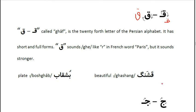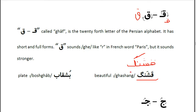Let's take a look at two sample words. The first one starts with Qaf in the beginning, so we use the short form. The next letter is 'Shin' with three dots above, then 'Ne,' and finally 'Ge' at the end — so we need the full form of the letter. The word is 'Shanga' — shanga means beautiful.